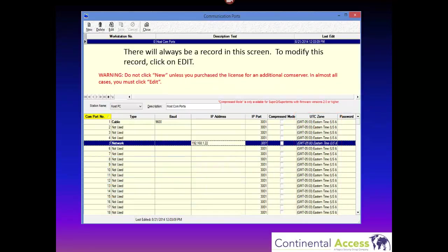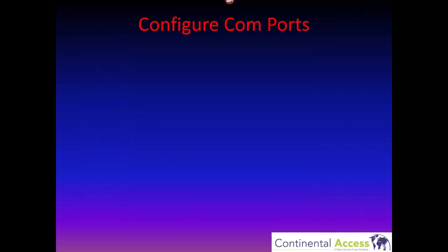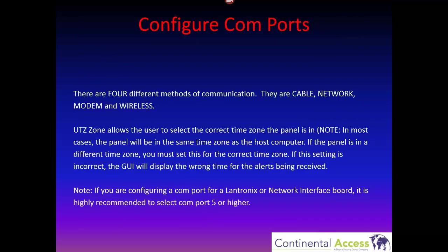There will always be a record on this screen. To modify this record, click Edit, make the changes, and then click Save. Under comm ports, there are four different methods of communication: cable, network, modem, and wireless.